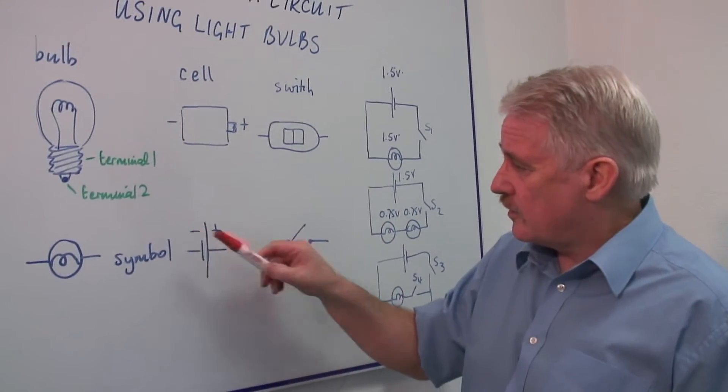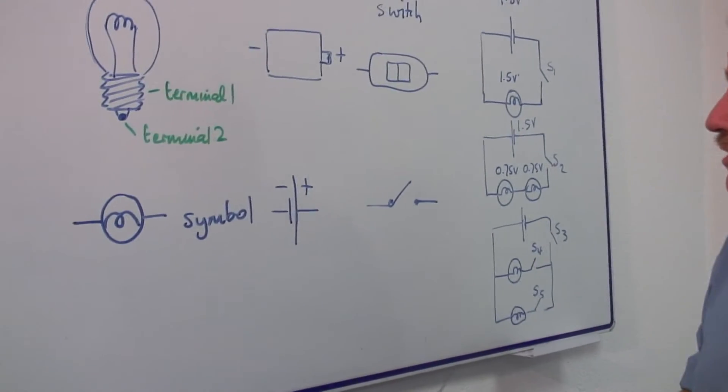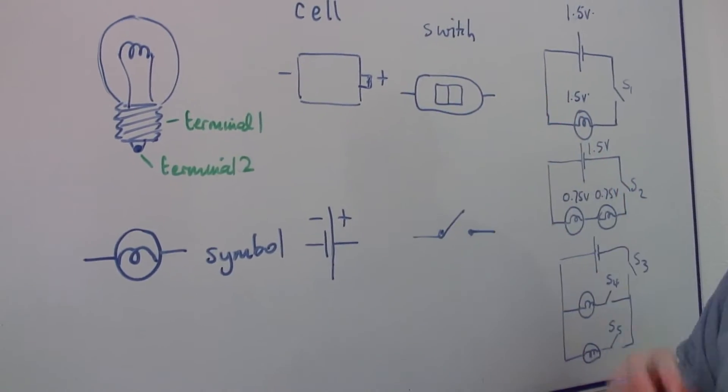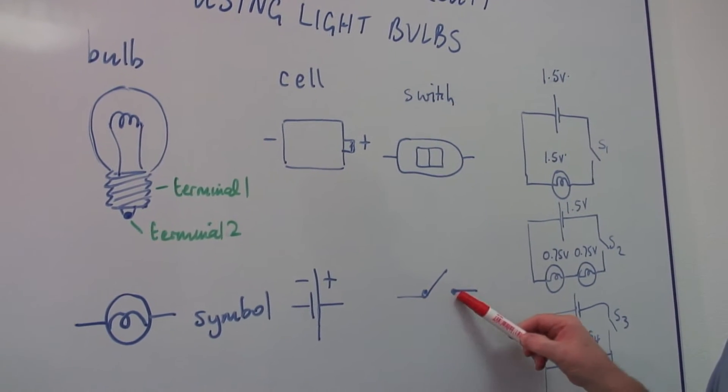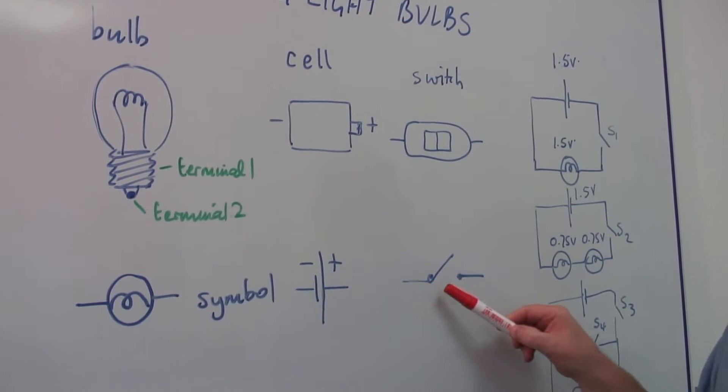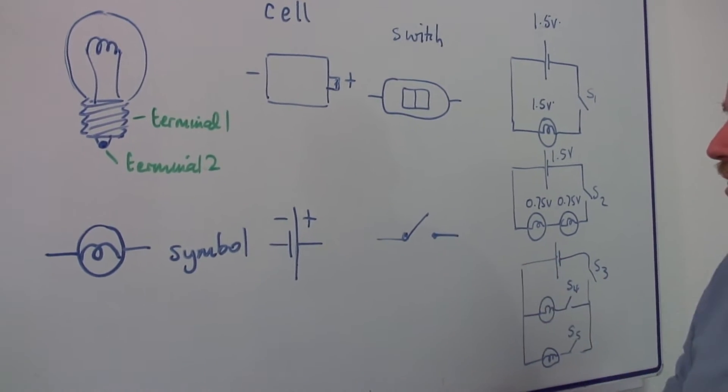Short line, long line. Short line, negative. Long line is positive. And we also probably need a switch, or switches. In which case, the switch has two connections, and it is simply represented by that symbol.